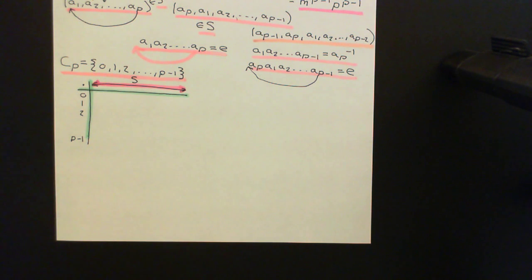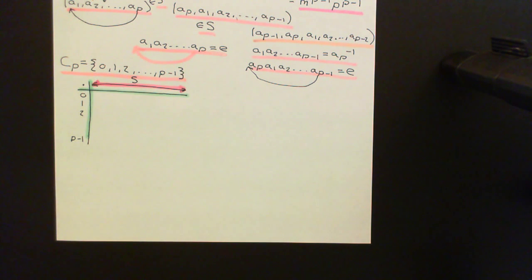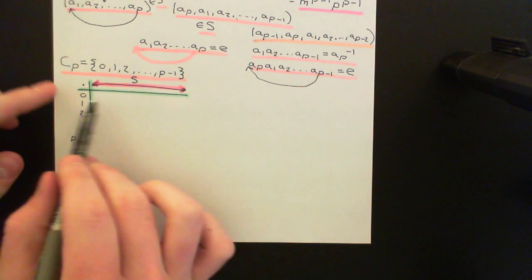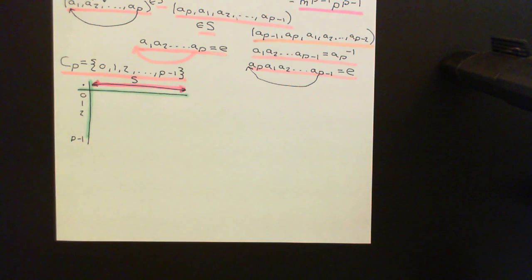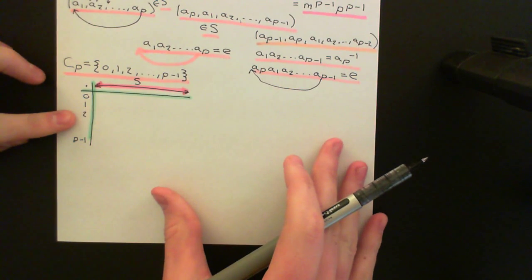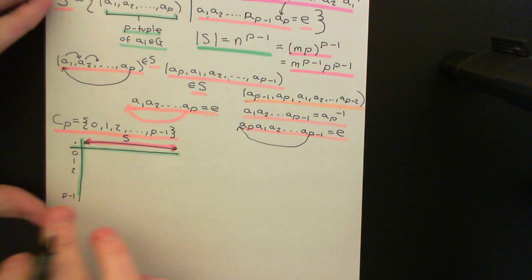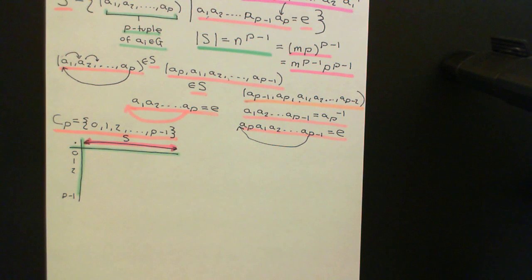How are they going to act? They're just going to cycle the entries in the cyclic way we've discussed. We've already discussed that when you cycle the entries in a P-tuple that's in capital S, the result is always still going to be in capital S — it's always still going to obey the important criterion. So 0 cycles everything by nothing, leaving it exactly the same. 1 cycles everything to the right by 1, 2 cycles everything along by 2, and so on, all the way to P-1, which cycles everything to the right by P-1.